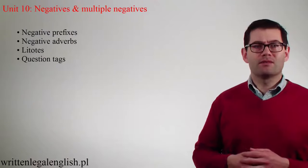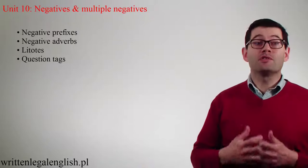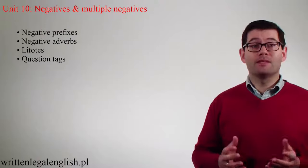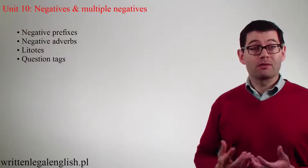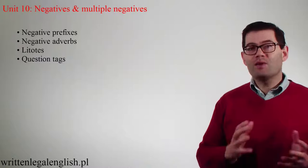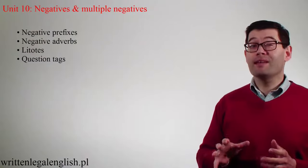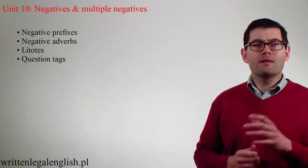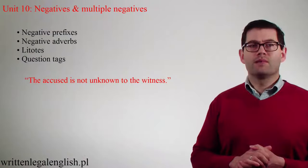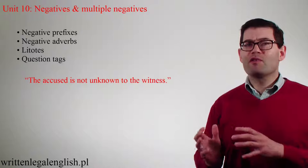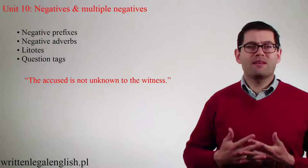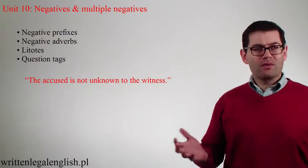Another example is that of litotes. Litotes are a form of understatement used for emphatic effect. For example: as a lawyer, he's not bad — in other words, I'm saying that as a lawyer, he's very good. The problem comes in when we use litotes with a word which has got a negative prefix, in which case it might suggest something which is unlikely or uncertain. Think about the sentence: 'The accused is not unknown to the witness.' Does this mean that the witness knows the accused very well, or only as an acquaintance? It's something that will cause you to sit back and think about what the writer meant. Couldn't it be written in an easier way?